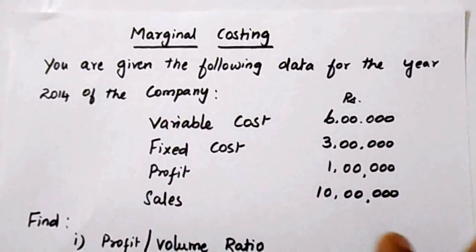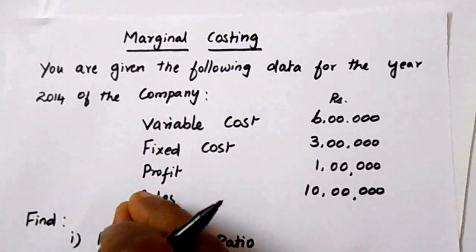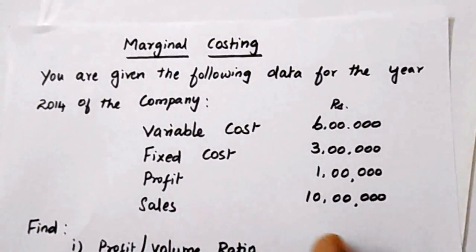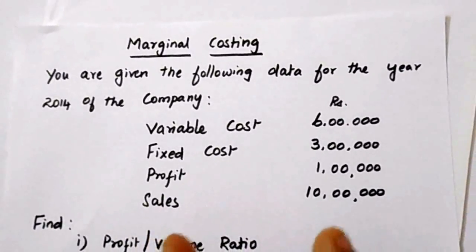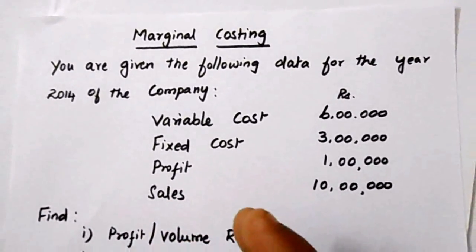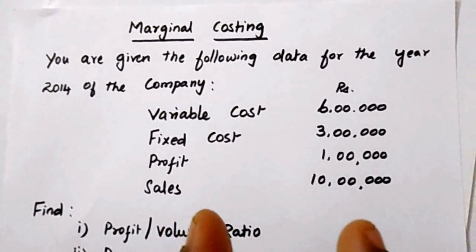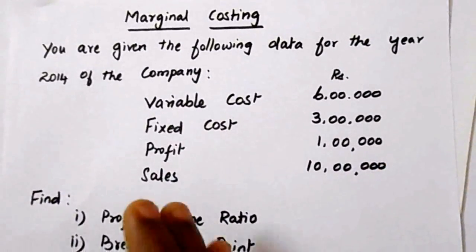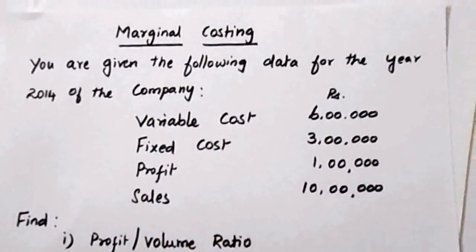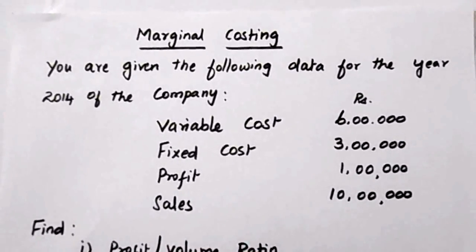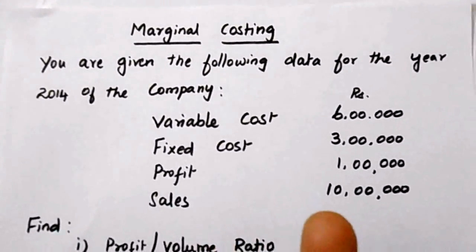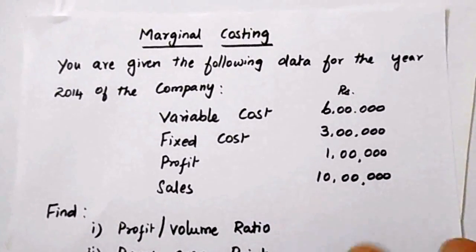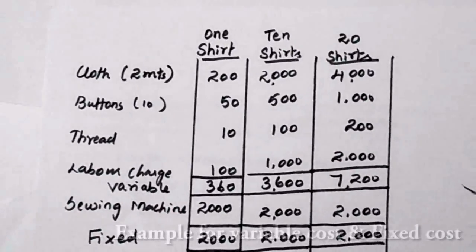For example, if you have produced a thousand units and now you decide to increase the volume of production from one thousand to one thousand one hundred, the cost incurred for those additional hundred units alone is called marginal cost — that is the additional cost. According to the accountant point of view, marginal costing applies to the total cost obtained by adding prime cost and variable cost; in other words, it is the total cost other than fixed cost.